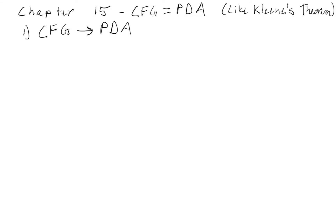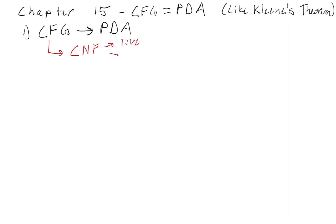We're going to do this in two steps. Step one: we're going to prove that for every context-free grammar, we can generate a push-down automata. We'll present a step-by-step algorithm that converts a context-free grammar into a push-down automata. The first step is to convert the context-free grammar into Chomsky's normal form, which makes it easy since we only have live productions and dead productions to worry about. By converting to Chomsky's normal form, the only change to the original language is that we remove the null word, which we'll work back into our algorithm.